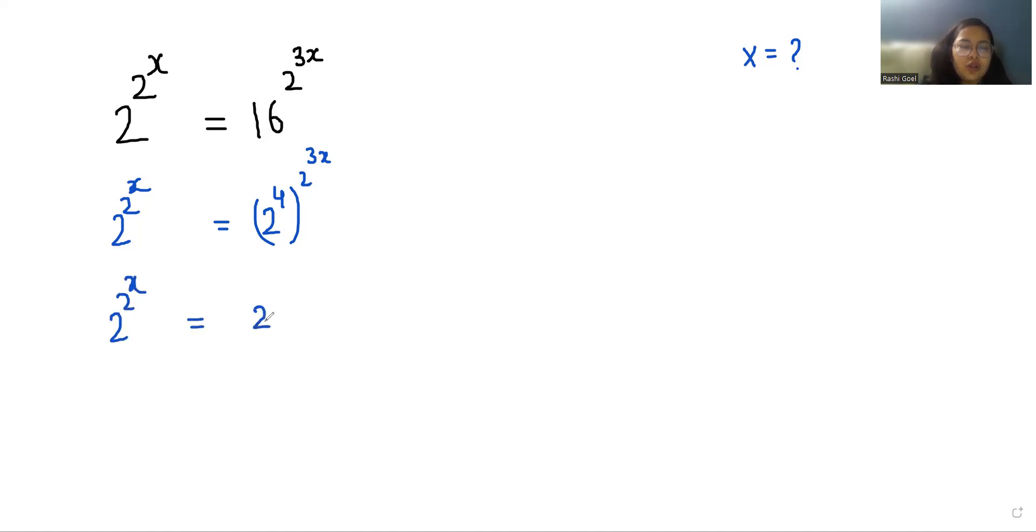equals 2. According to (x^m)^n = x^(mn), it becomes 2^(4×2^(3x)). Now 2^(2^x) equals